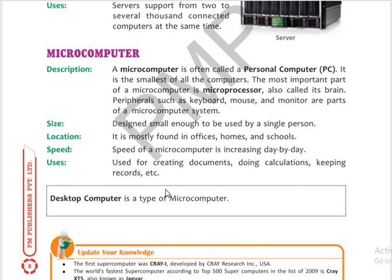The microcomputer is mostly found in offices, homes, and schools for personal use. Its speed is increasing day by day. Before, phones had 1GB or 2GB RAM, but now they have much more.